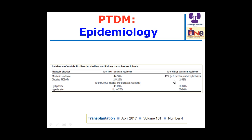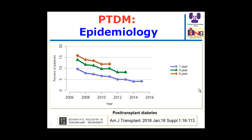Other data show that metabolic syndrome occurs in 40% at six months post-transplantation, and the range for post-transplant diabetes is 2 to 53%. According to United States data, diabetes incidence at one year, three years, and five years after transplantation can be tracked from the reported figures.